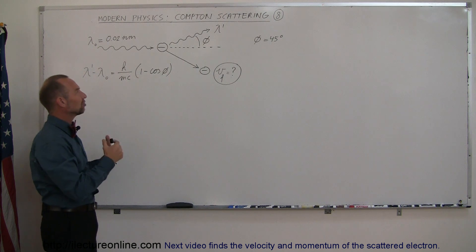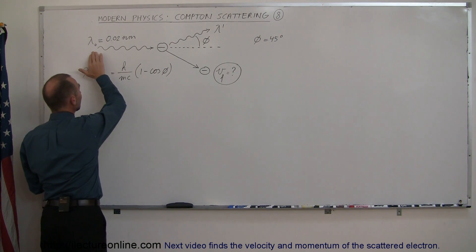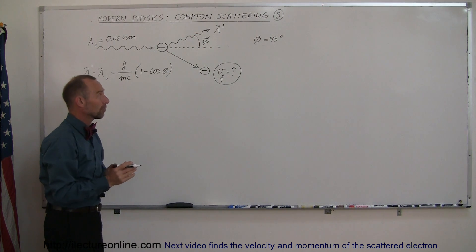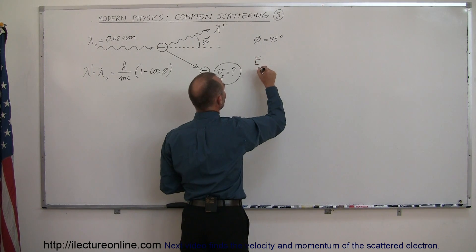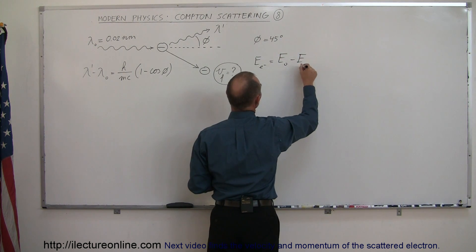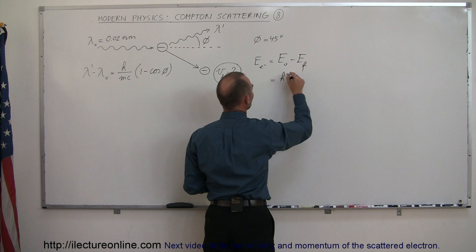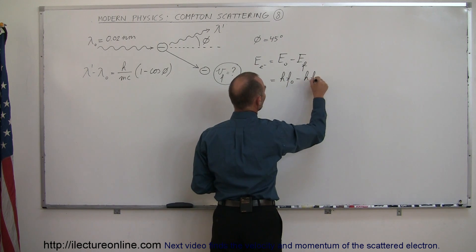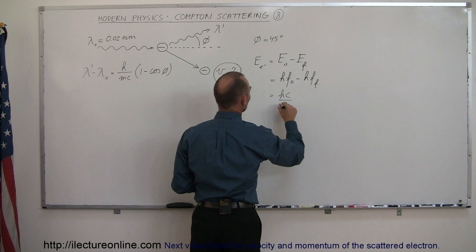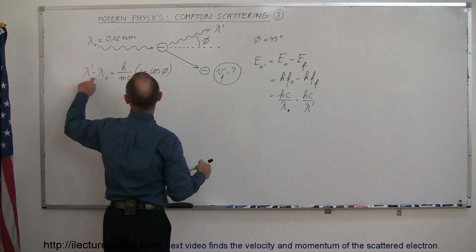That velocity comes from the kinetic energy imparted on the electron from the collision. Whatever energy the photon had initially, we subtract from that the energy it has after it collided off the electron. The difference between those two energies must be the energy given to the electron. So the energy of the electron equals the original energy of the photon minus the final energy of the photon, which is h times the original frequency minus h times the final frequency, or hc over lambda initial minus hc over lambda final.